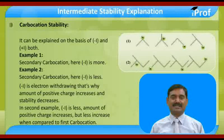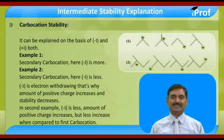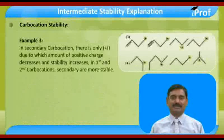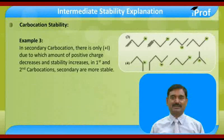In the second carbocation, -I is present but less, so the amount of positive charge increases but less compared to the first carbocation. In the third, this is a secondary carbocation with only +I effect. Due to +I, the amount of positive charge decreases and stability increases. Among the first and second, this is a more stable carbocation.